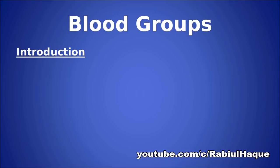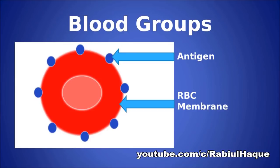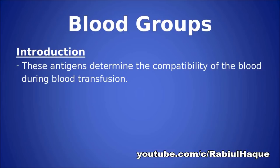First we will talk about introduction to blood groups. Always remember, bloods of different people have different antigenic and immune properties. At least 30 commonly occurring antigens and hundreds of other rare antigens are discovered on the surfaces of cell membranes of human blood cells. For example, here I am showing you an image of red blood cells, and if you look carefully on the membrane of this red blood cell, we can see some antigens. These antigens can determine the compatibility of the blood in transfusion.